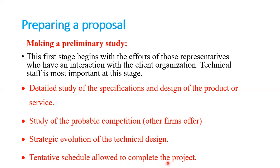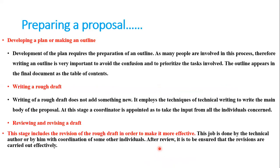You have to give an assumptive plan indicating when you will be able to complete the project. In the agreement, the timeline can be extended by two or three months, but at the proposal stage you must give an estimated time. Then comes the stage of proposal writing — developing a plan or making an outline. Once the preliminary study is done, you move to the writing stage.